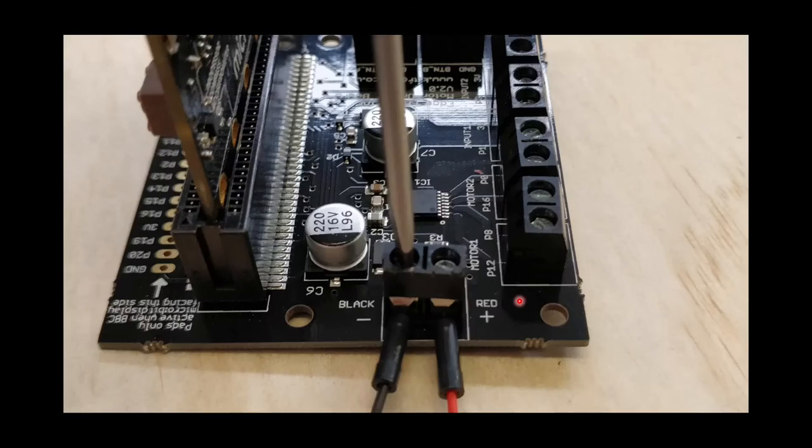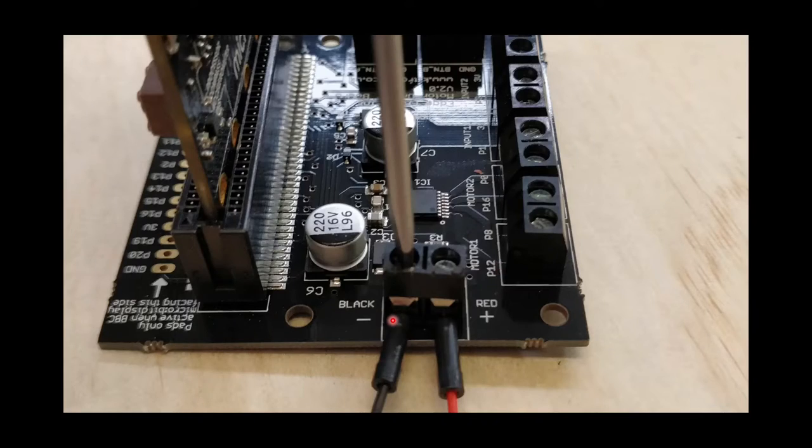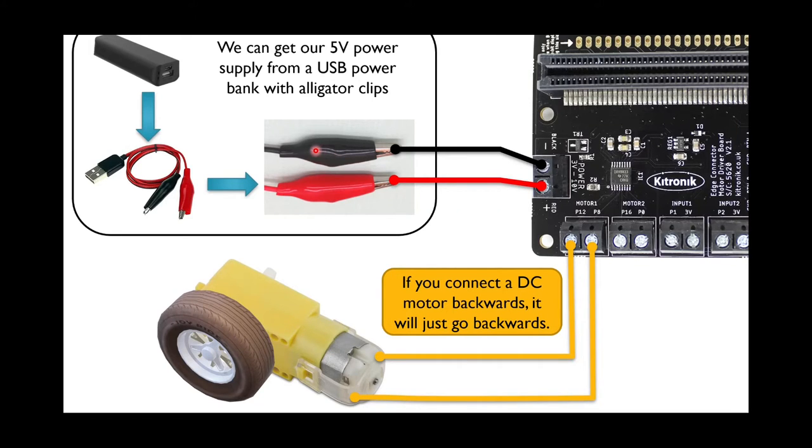Then get the wire that was plugged into the red alligator clip, screw that into this side, and the same for black. So now, hopefully, the one going from the black alligator clip is screwed into black, and the one going from the red alligator clip is screwed into the red.